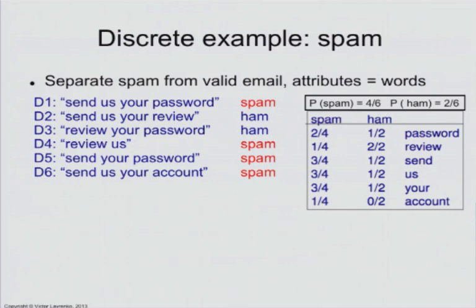The next thing you do is take all the individual words you ever saw in your emails, construct a vocabulary out of those words, and then start counting how many times you saw each word in ham emails versus spam emails. So the word 'password' — we saw it one, two times in spam emails, so it's two out of four.